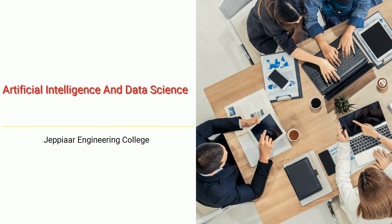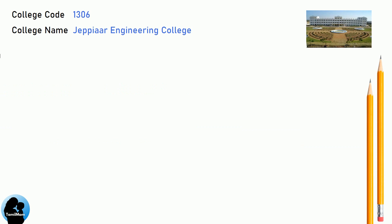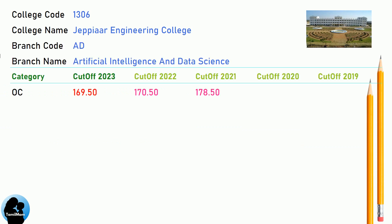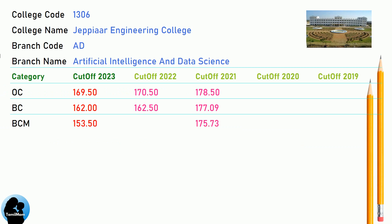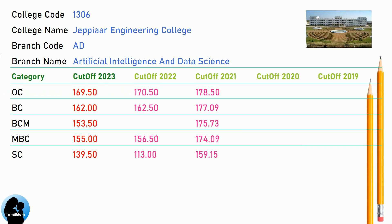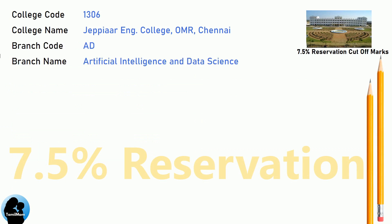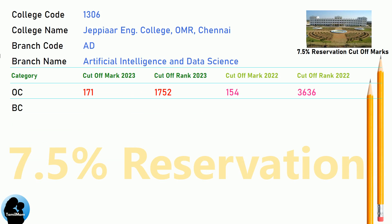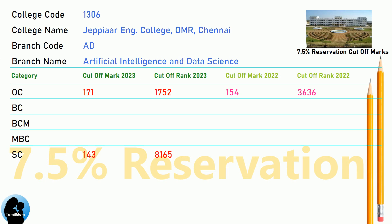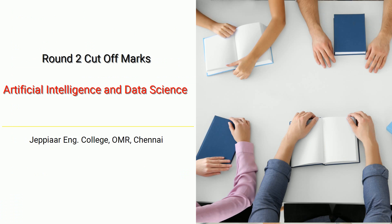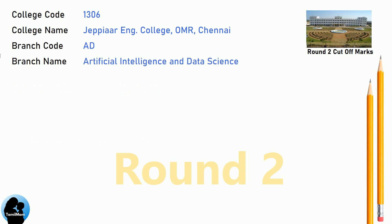DNA Cut-off for JPR Engineering College in Artificial Intelligence and Data Science. DNA 7.5 Reservation Cut-off for JPR Engineering College in Artificial Intelligence and Data Science. DNA Cut-off for JPR Engineering College in Artificial Intelligence and Data Science.